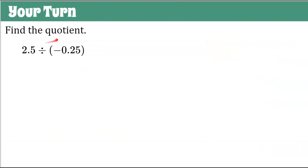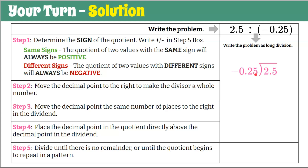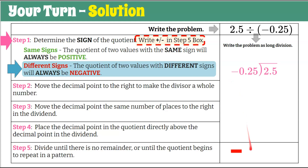Now it's your turn. Find the quotient of 2.5 divided by negative 0.25. Let's go to our graphic organizer, bring in our problem, and write it as long division: 2.5 divided by negative 0.25. Step one — determine the sign. We have positive and negative: different signs, so our quotient will be negative. We record that in our step five box so we don't forget.